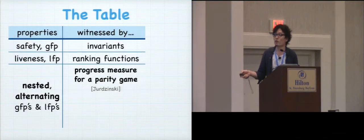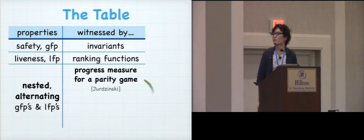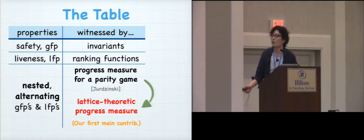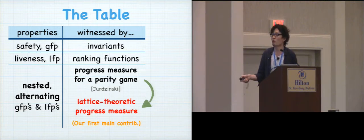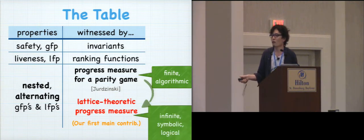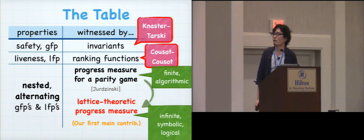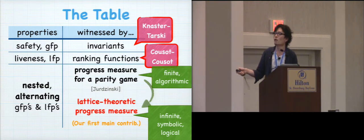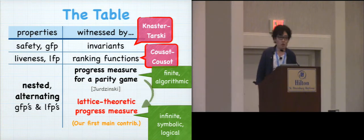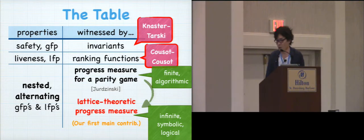Okay, so this has been about this progress measure for a parity game. And our goal, our first contribution is the generalization, or lattice theoretic characterization of this algorithmic notion to this, what we call lattice theoretic progress measure. This is our first main contribution. And in defining this guy, we rely on the two characterizations of fixed points that are behind these more common proof methodologies.